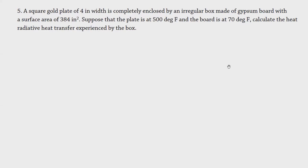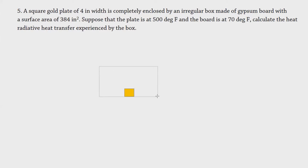Now let's start using the view factor to solve radiation problems. This problem is a two-zone enclosure because we have a square gold plate — I'll try to draw it — and this gold is enclosed in an irregular box made of gypsum. The question is: what will be the radiative heat transfer experienced by the box? So we have Q radiation equal to...